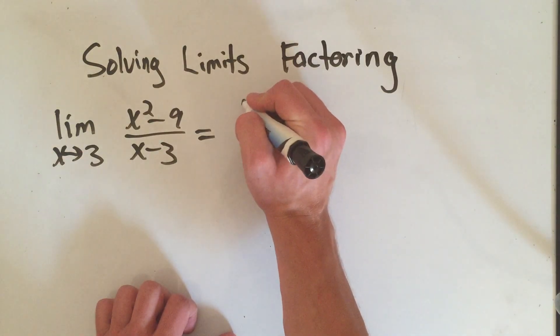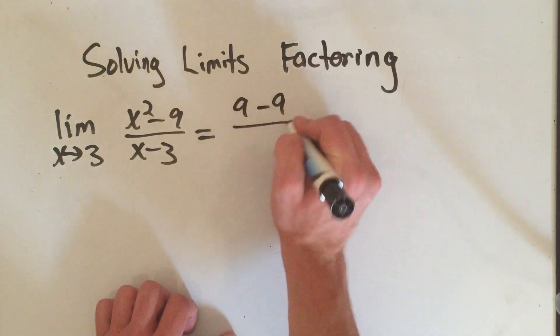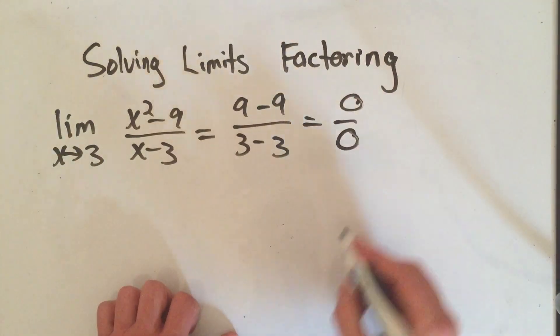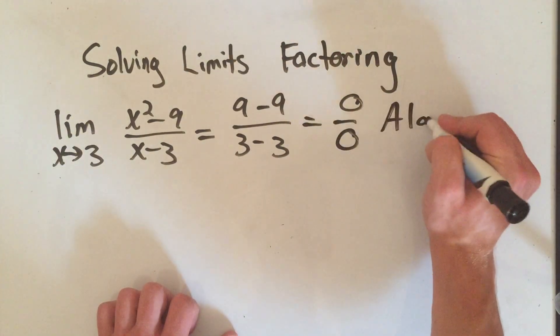If I plug in 3, 3 squared is going to be 9 minus 9 on top over 3 minus 3 on the bottom. That's 0 over 0. 0 over 0 means we have to do algebra.